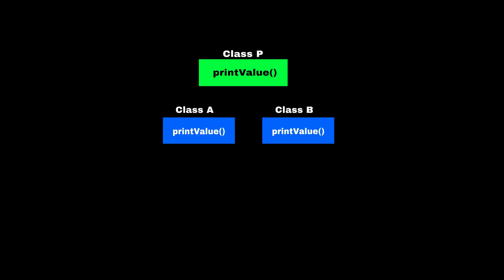Consider a parent class B which has one method called print value. Now consider two child classes A and B which are inheriting from this parent class B. Due to inheritance, both A and B classes will receive a copy of the print value method.